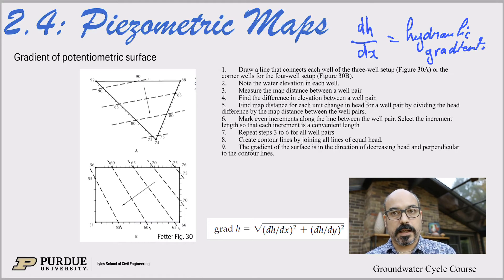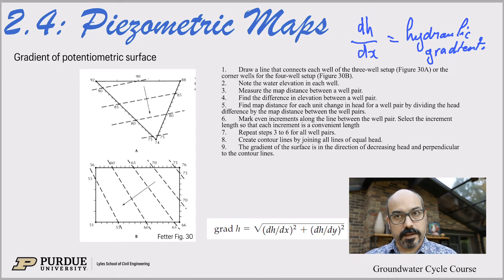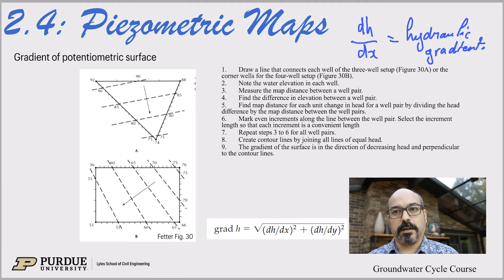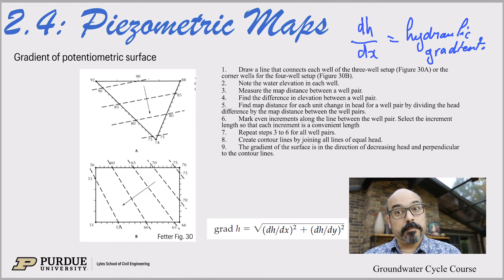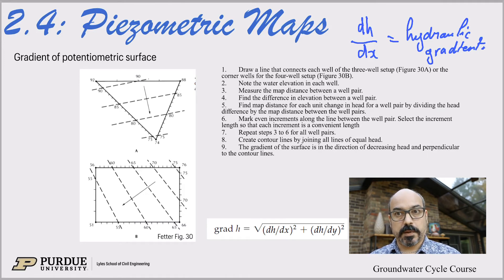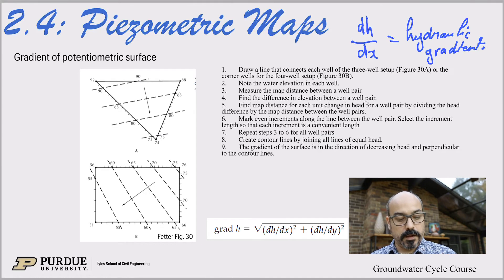It's just like a downhill race — if you drop a ball at the top of the mountain, it goes down. Same for water: if there's a hydraulic gradient, the water flows downhill, down the gradient. Piezometric maps are used to find out where the water goes — basically how the groundwater is flowing underground.